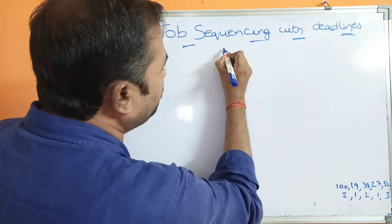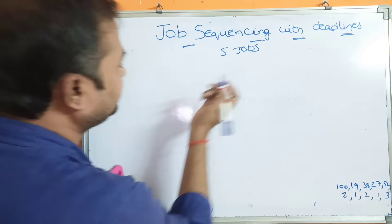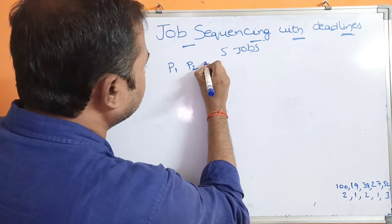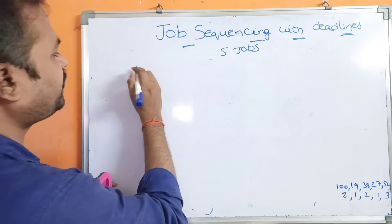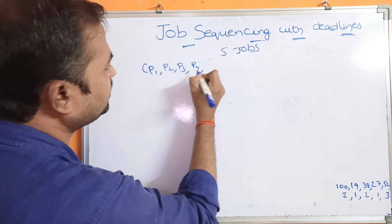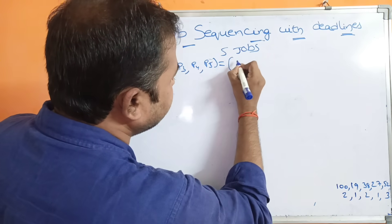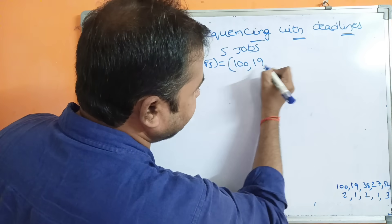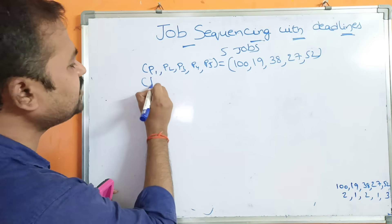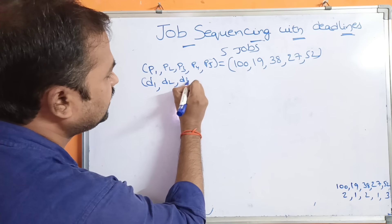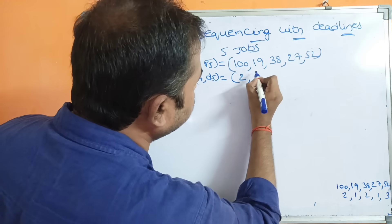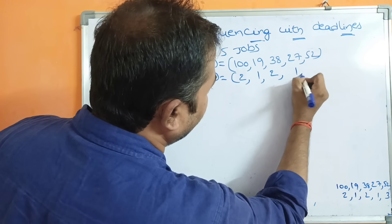Let us solve an example with five jobs. The profits are: P1=100, P2=19, P3=38, P4=27, P5=52. The deadlines are: D1=2, D2=1, D3=2, D4=1, D5=3. We need to find the optimal solution — the sequence that maximizes total profit.